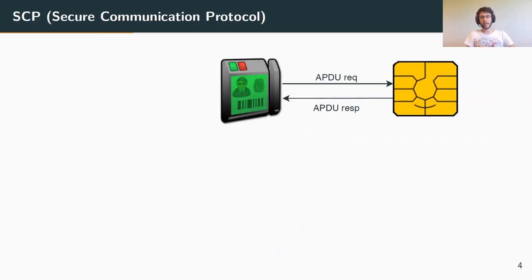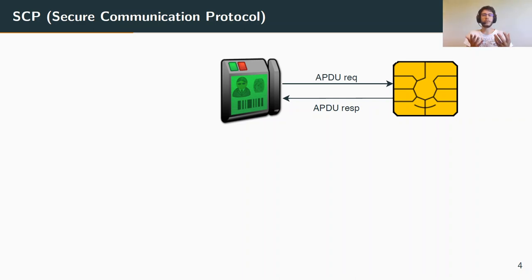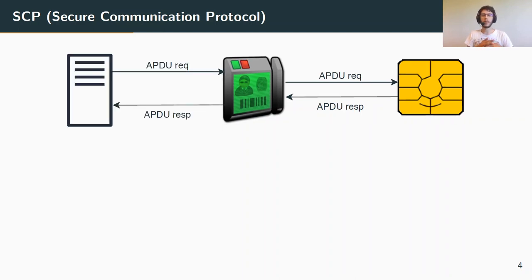In this communication, smart cards always act like a server: they can only process requests and respond with what's called an APDU, which stands for Application Protocol Data Unit. They interact with what we will call an off-card entity through a reader, which can be either a standalone reader — in which case the reader itself is the off-card entity — or a proxy receiving commands from an external server, in which case the server is the off-card entity.